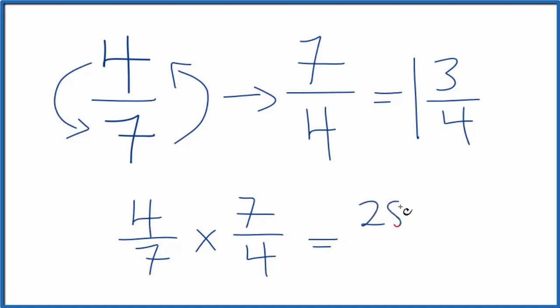Four times seven, that's 28. Seven times four is 28. 28 divided by 28 is one. So we did this first part correctly.